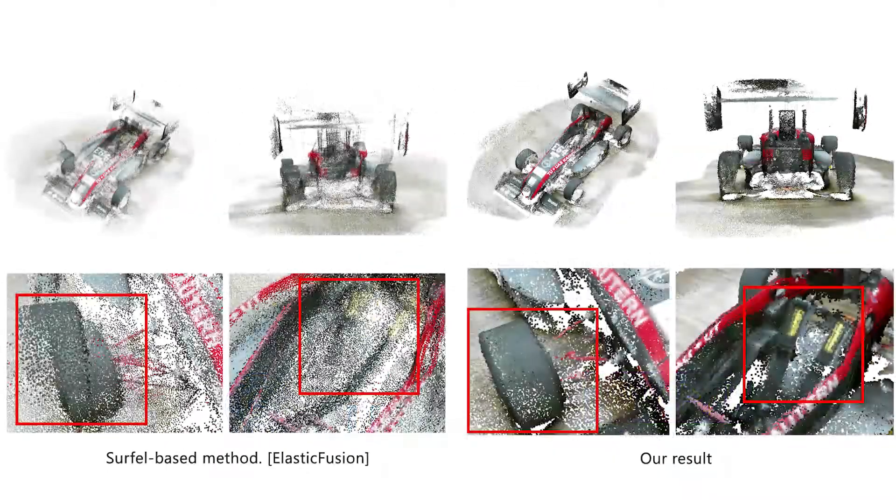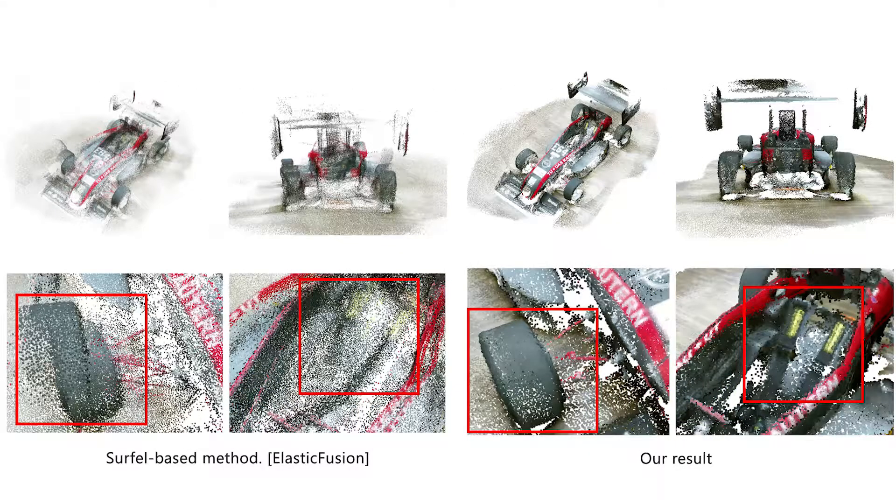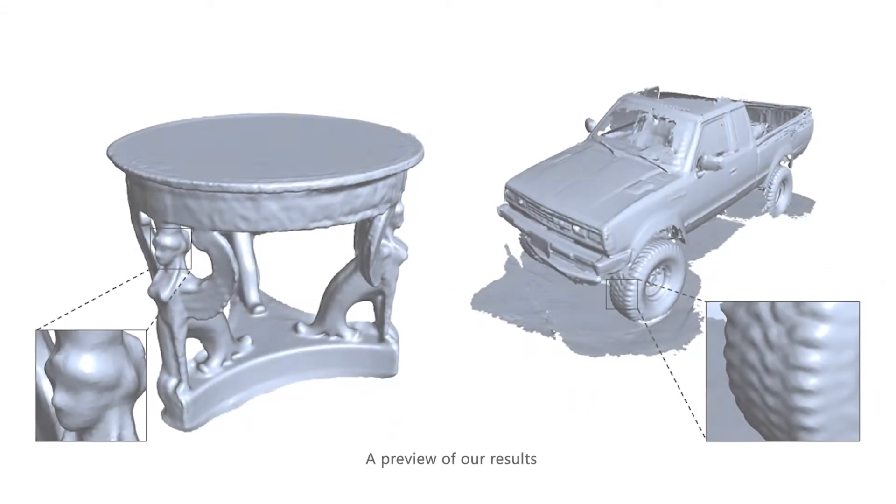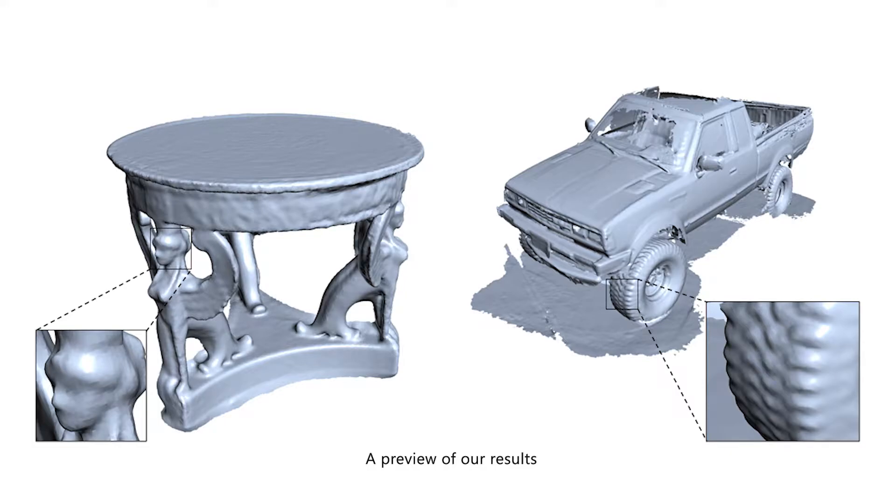The existing RGBD surface reconstruction systems are based on a discrete surface representation, which suffers from its discrete nature and limited resolution. We propose to use the closed-form continuous Hermit radial basis functions for surface representation and prediction to overcome these limitations.